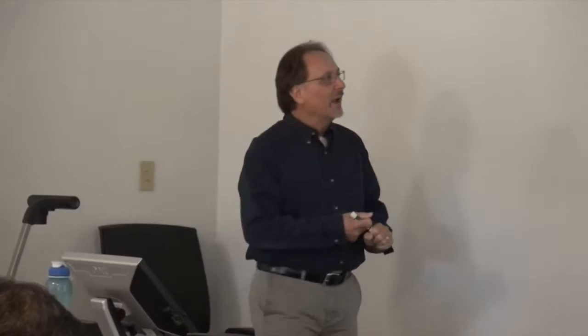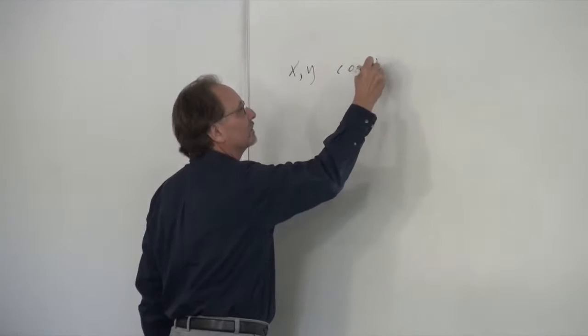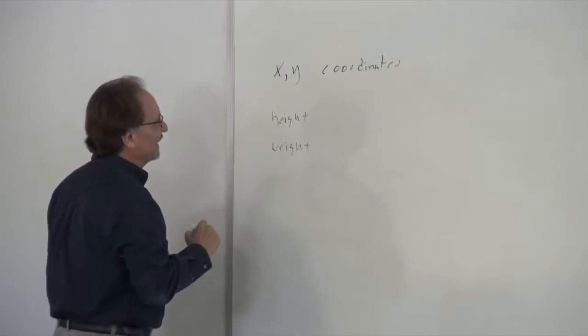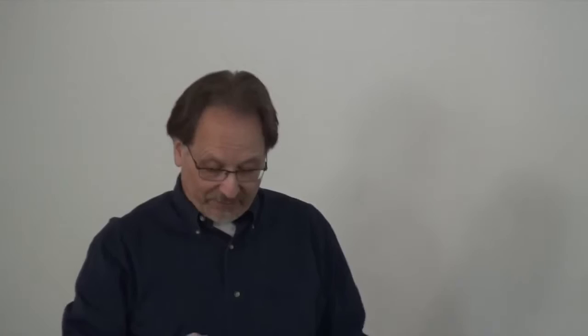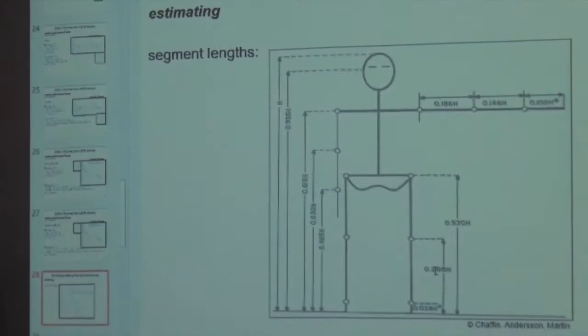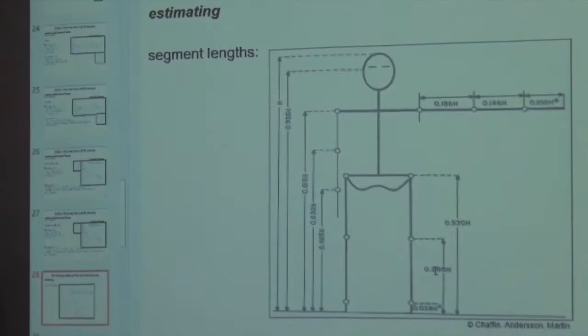So, the data that you will have are the XY coordinates, the height and weight of the subject, and also the load, if there is anything. That means we have to make some sort of inferences about the segment lengths as a proportion of height. This is an average segment distribution.